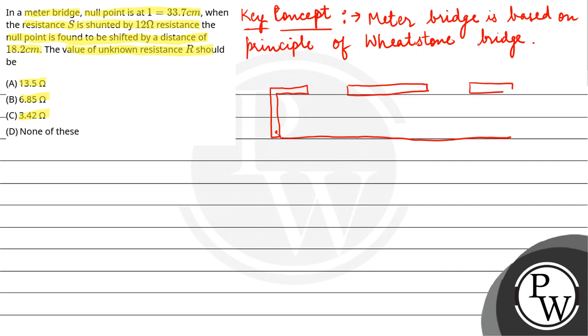So one will be resistance R, and the other one is resistance S. And here this is galvanometer with its choking. If our null point is at length L,